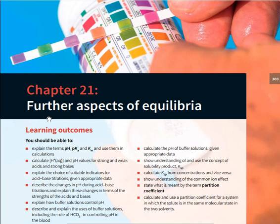So hello. We start with the learning outcomes of further aspects of equilibrium. We explain the terms pH, pKa, and pKw which are properties of water. We have calculated the concentration and the pH value of strong acids and bases. We explain the choice of suitable indicators for acid-base titration, and describe the change of pH during acid-base titration.